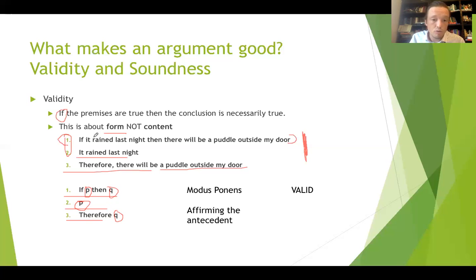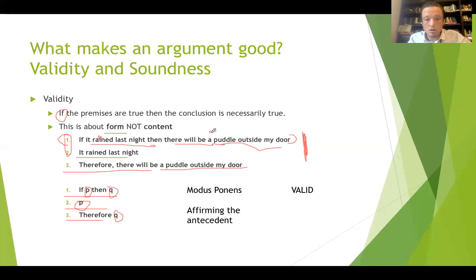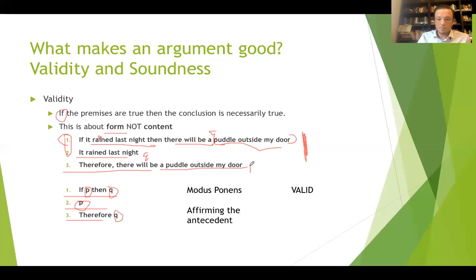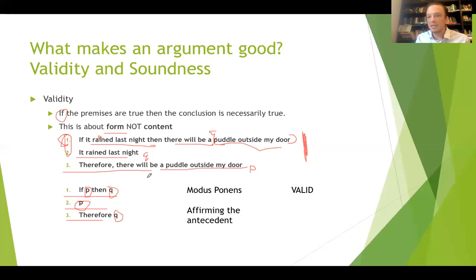So if it rained last night — that's your P — then there will be a puddle outside my door — that's your Q. So premise one is 'if P then Q,' premise two is P, therefore Q. There is no universe where if the first two were true, the conclusion wouldn't be true. It just logically has to be.